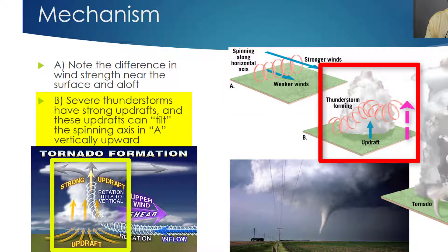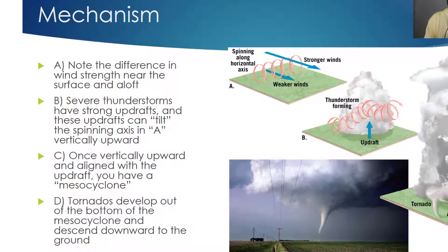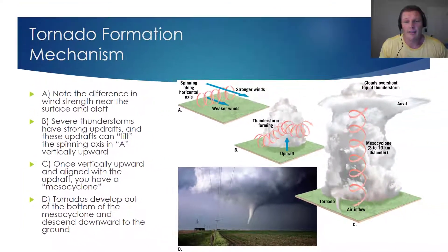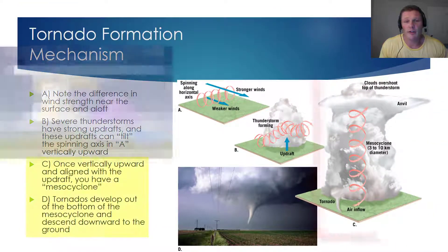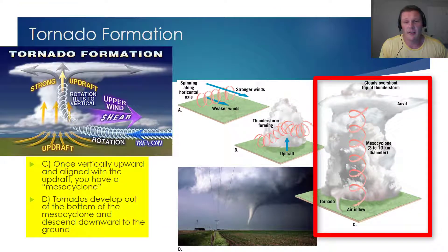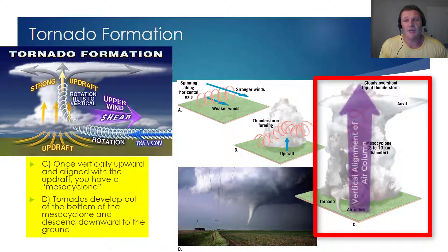So in part B, you can see that the strong thunderstorm updrafts are tilting that horizontally rotating air to a near vertical alignment. Then finally, if we focus our attention to part C, we have the development of what's known as a mesocyclone. The mesocyclone forms when that rotating column of air has reached a vertical alignment.